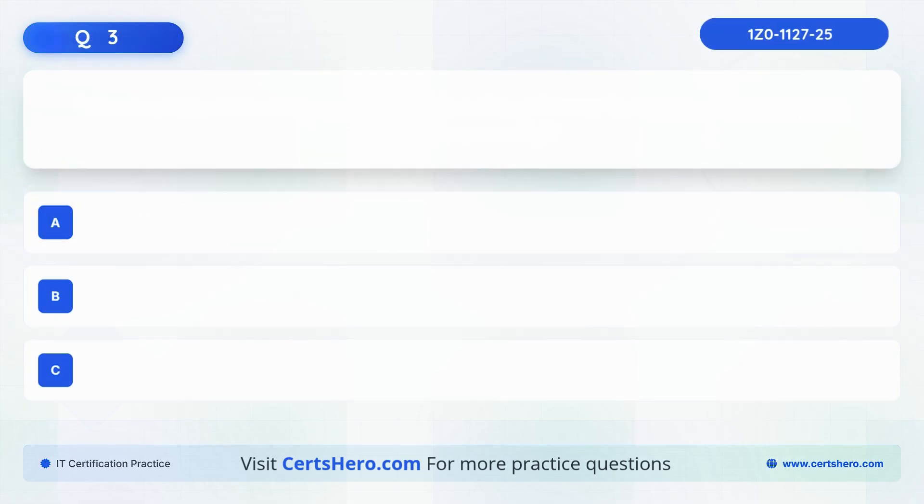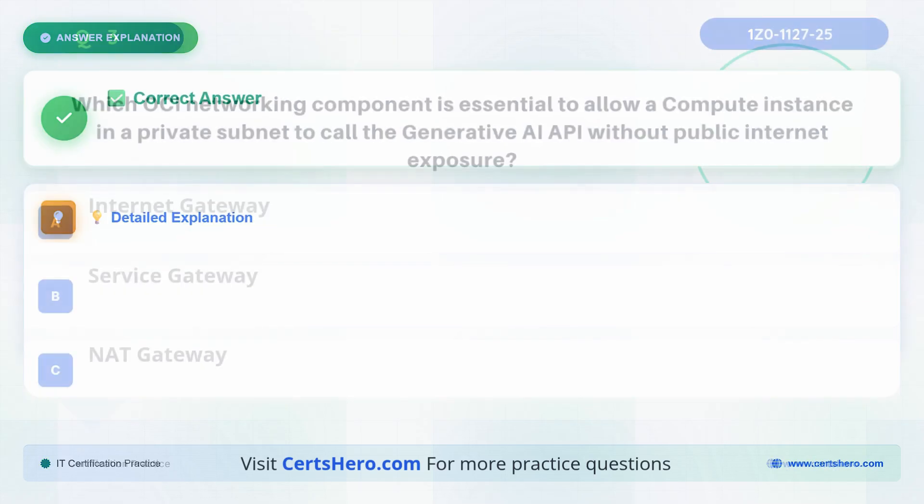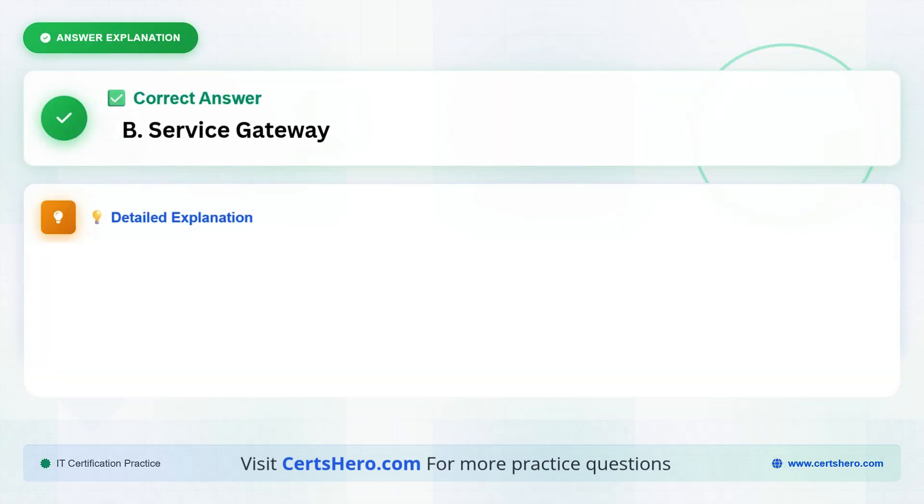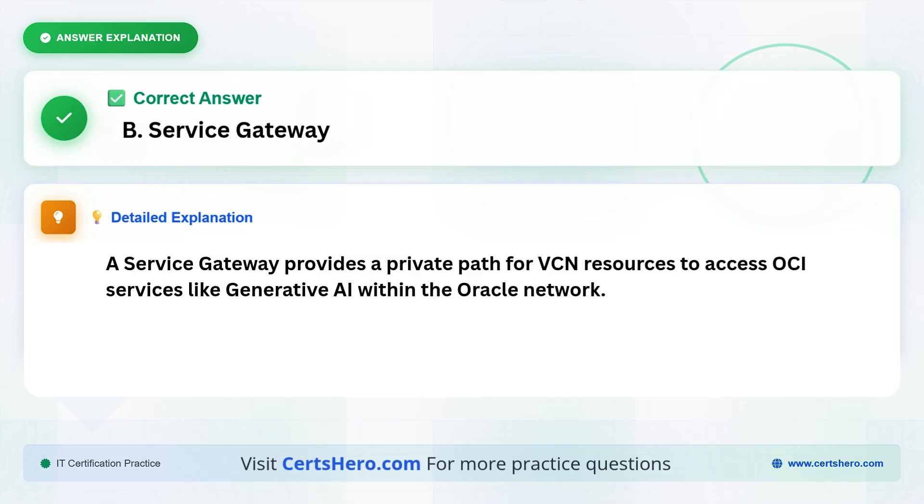Question 3. Which OCI networking component is essential to allow a compute instance in a private subnet to call the Generative AI API without public Internet exposure? Is it an Internet Gateway, a Service Gateway, or a NAT Gateway? The correct answer is B, a Service Gateway. A Service Gateway provides a private path for VCN resources to access OCI services like Generative AI within the Oracle Network.